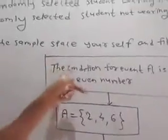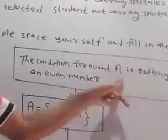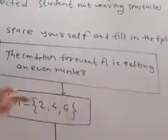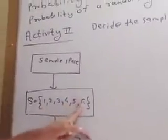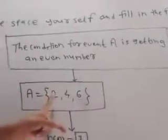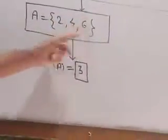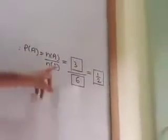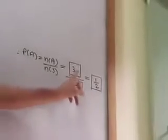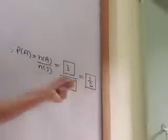Second. Here the condition for event A is getting an even number. Out of that, even numbers are 2, 4, 6. So A equals even numbers 2, 4, 6. Number of elements: 1, 2, 3. N(A) equal to 3. Then P(A) equal to N(A) upon N(S). That is 3 upon 6. The probability will be 1 half.